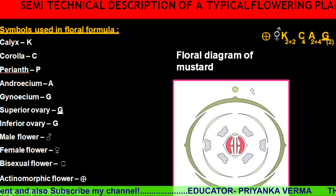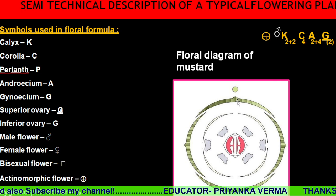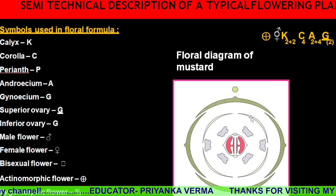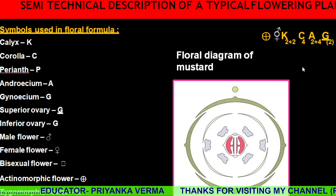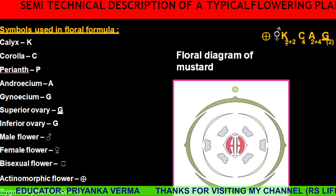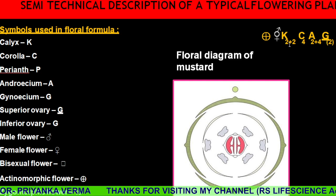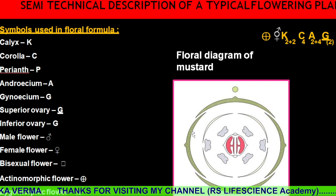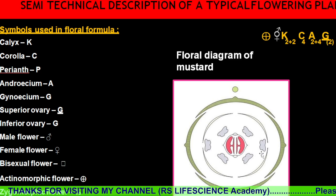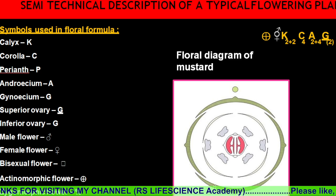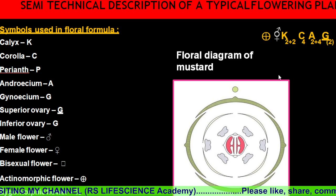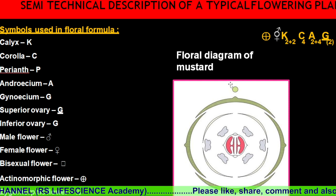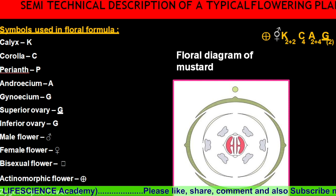How many corollas are there? One, two, three, four. How many petals are there? The count is two plus one, two, three. This is the green part, and this is the actinomorphic sign.